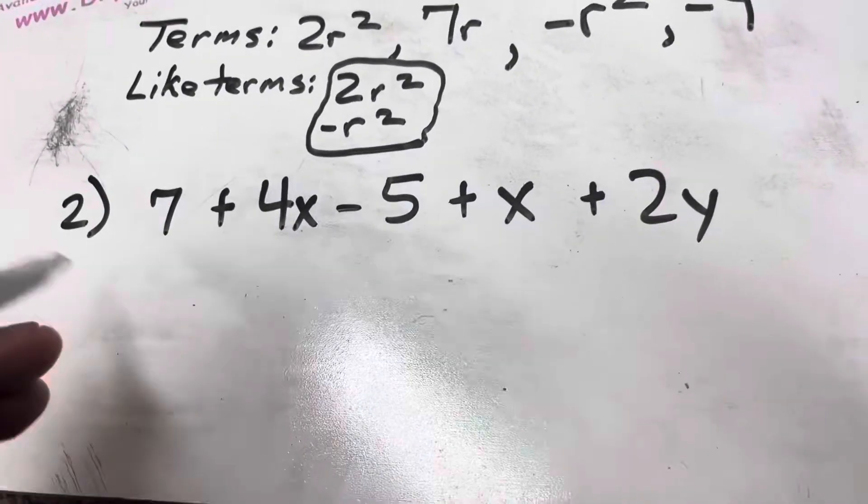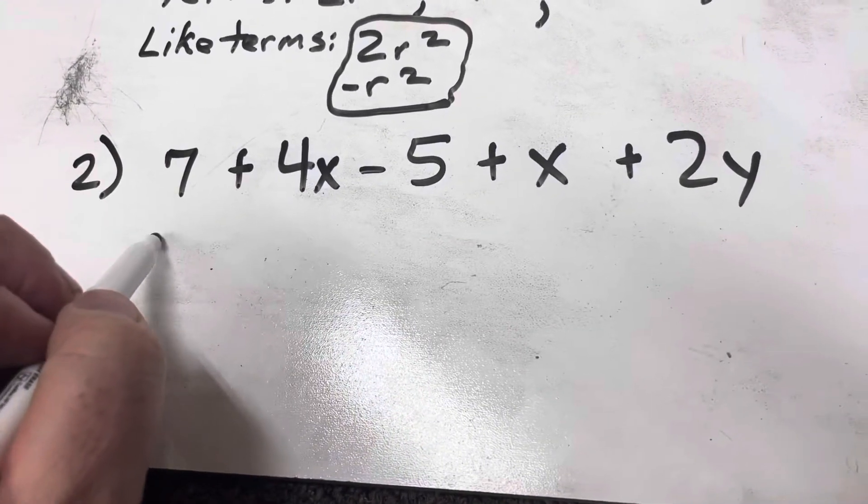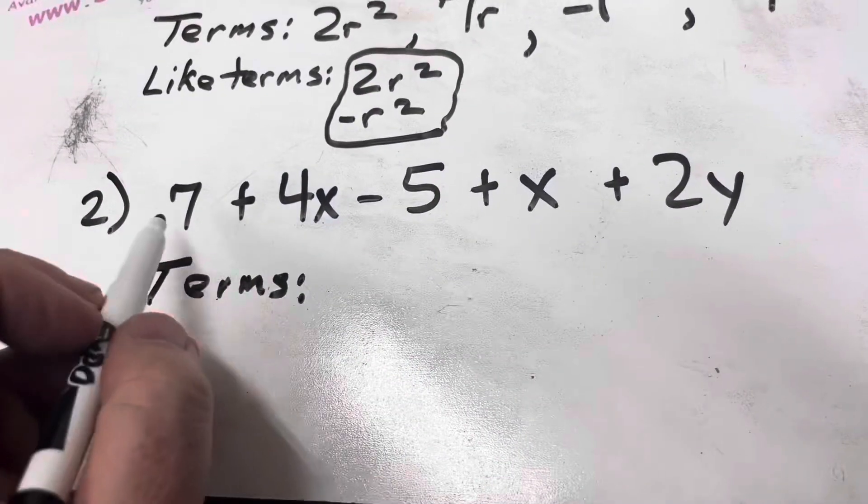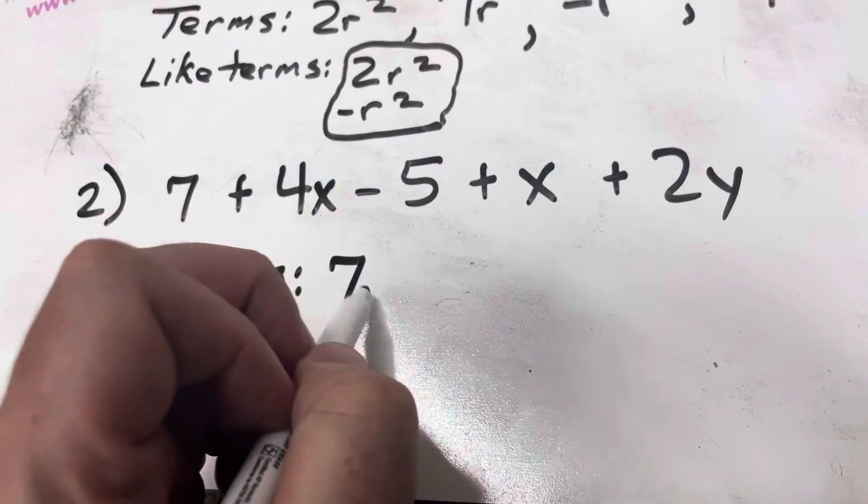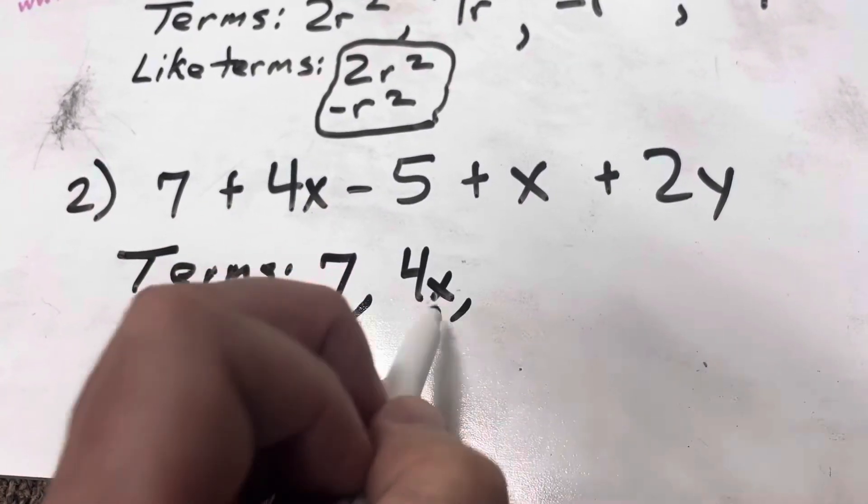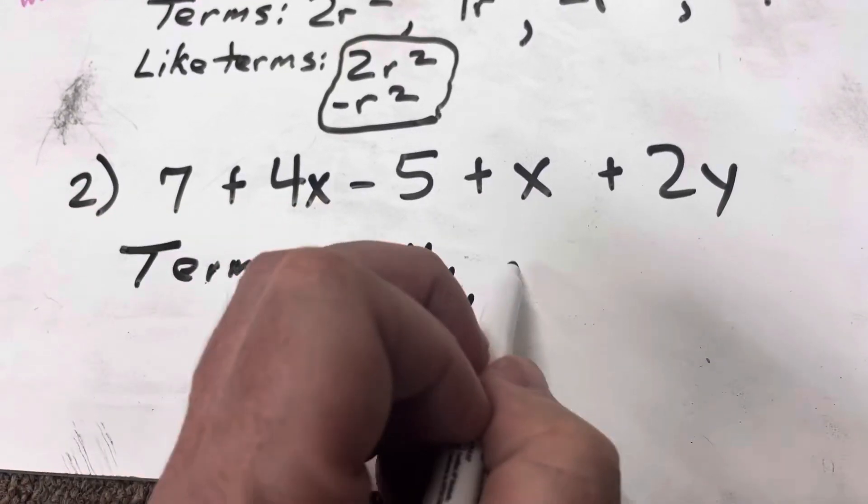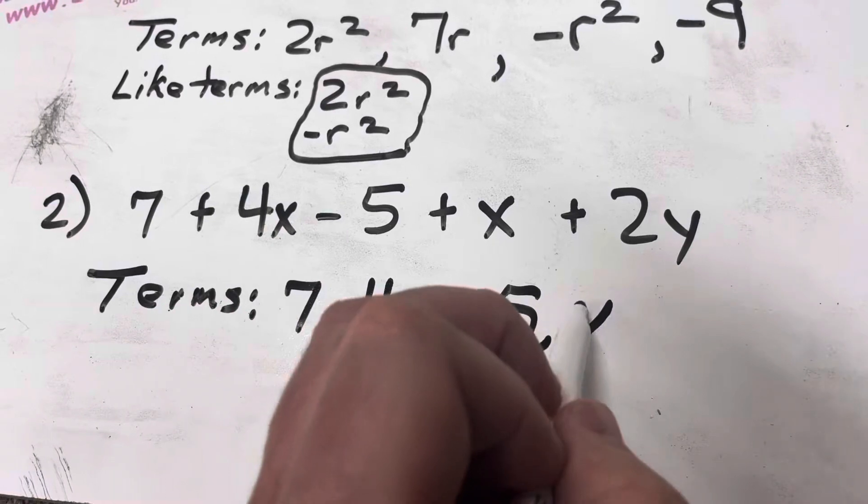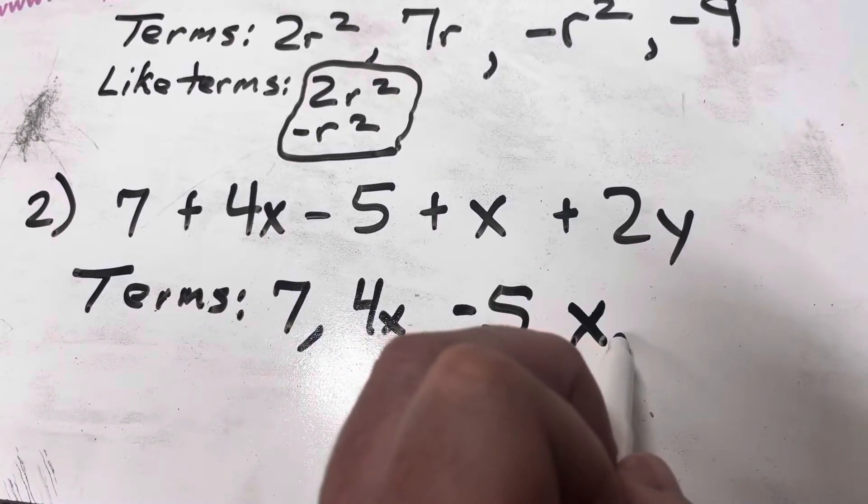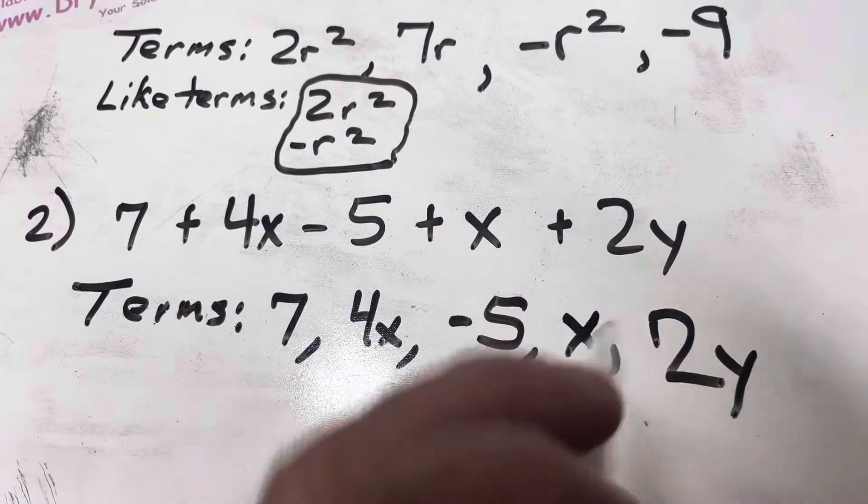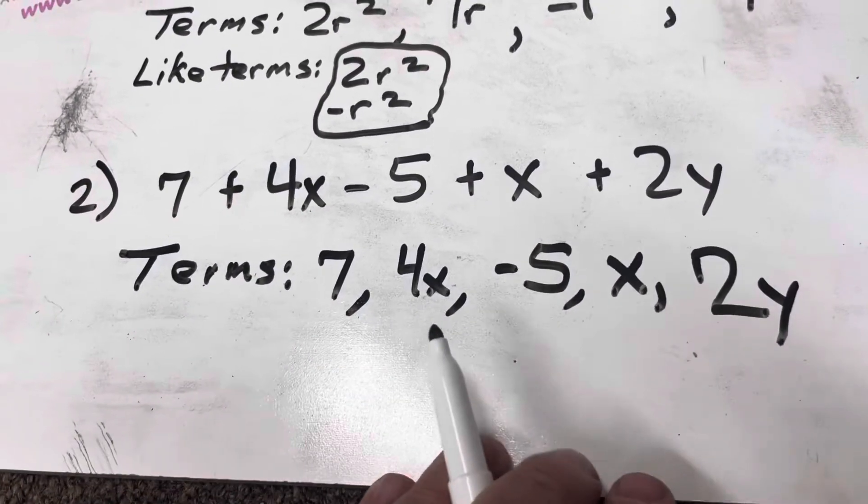Now, when I go into here, we're going to list my terms. My first term is 7. Then I have a positive 4x. Then I've got a negative 5. Then I've got a positive x. And then I've got a plus 2y. So we're just going to put the 2y.